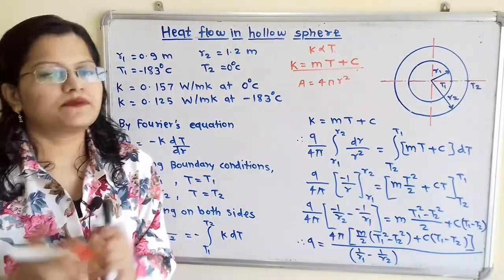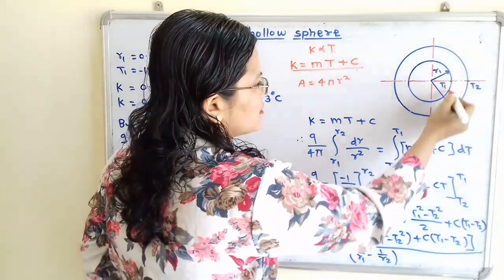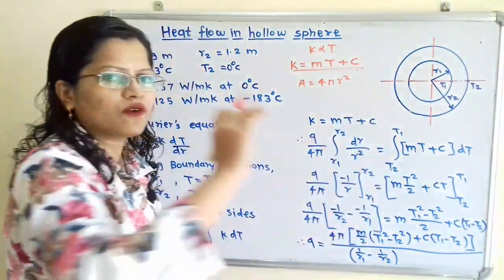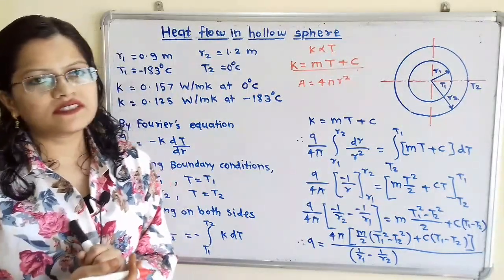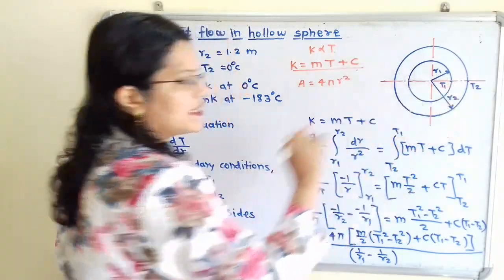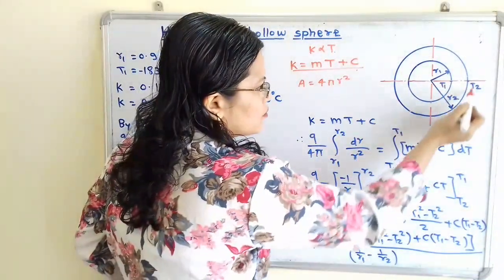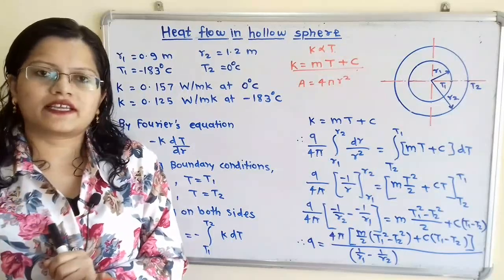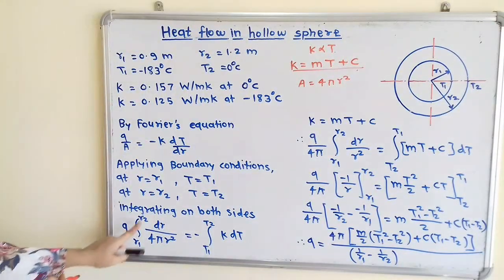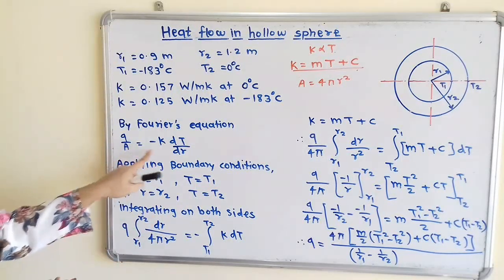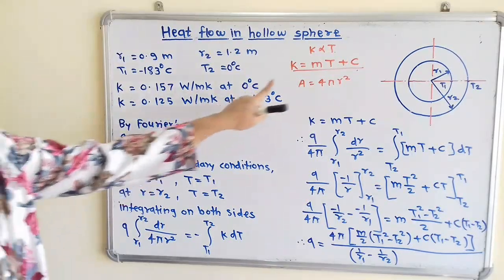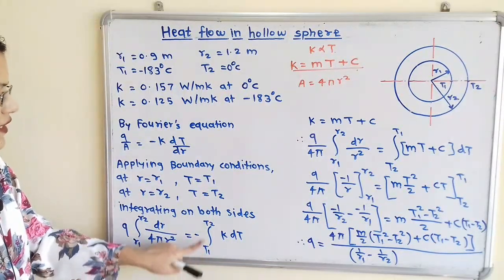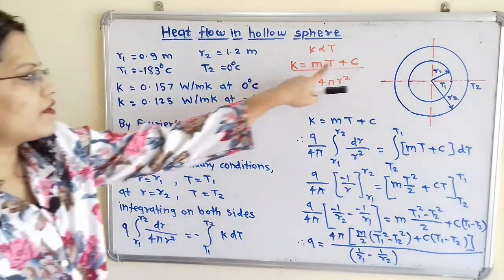We apply the boundary conditions: heat flows from the inside surface toward the outside surface. When R equals R1, T equals T1; when R equals R2, T equals T2. Taking integration on both sides, Q times the integral from R1 to R2 of dR divided by 4πR² equals minus the integral from T1 to T2 of K dT, where K is the function of T.